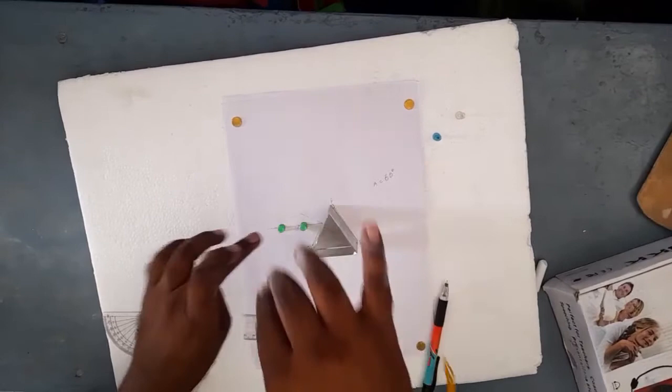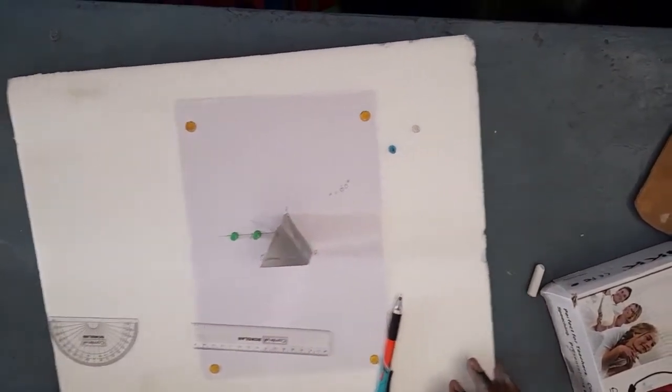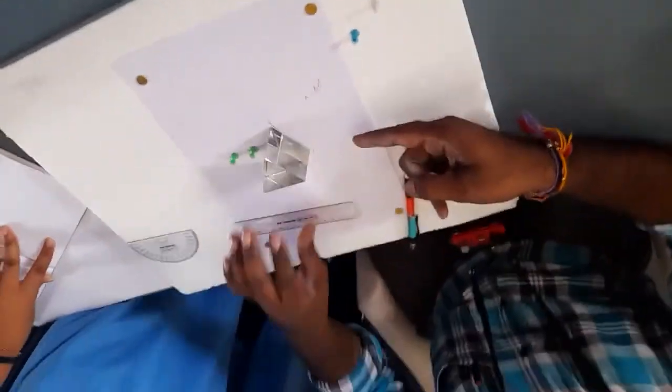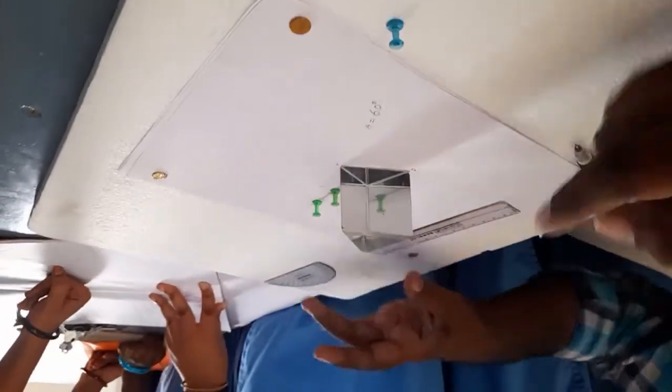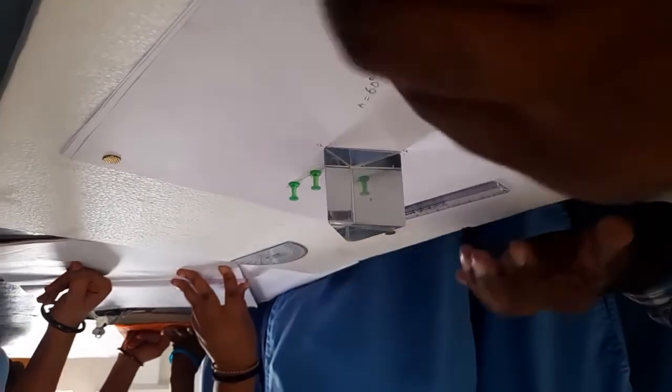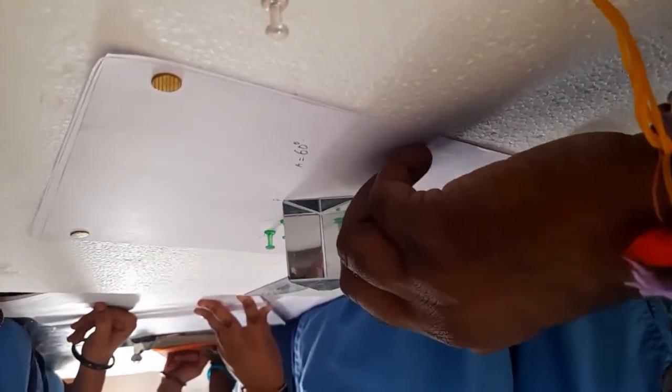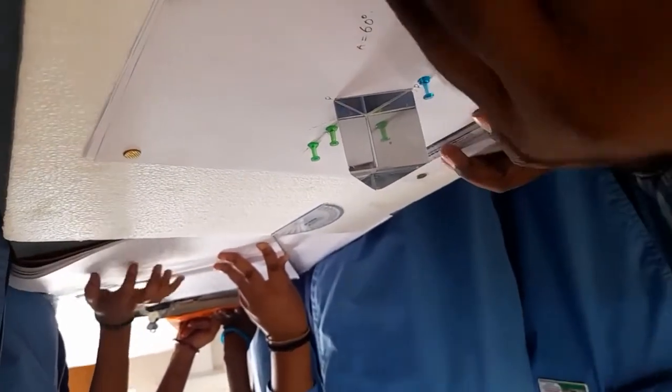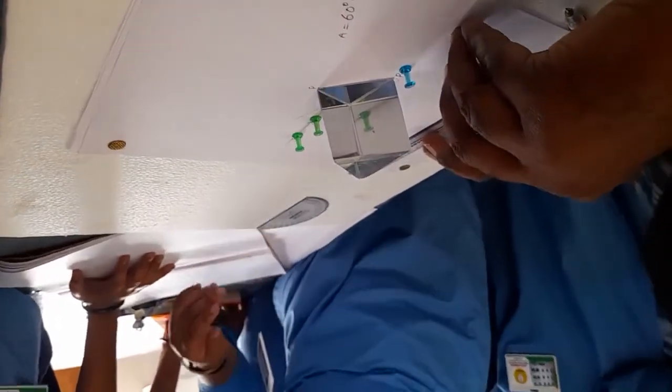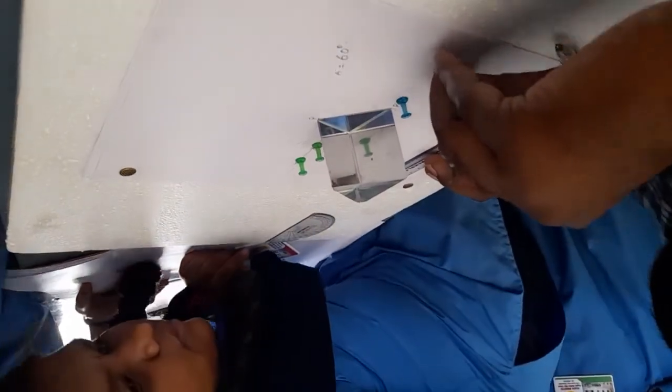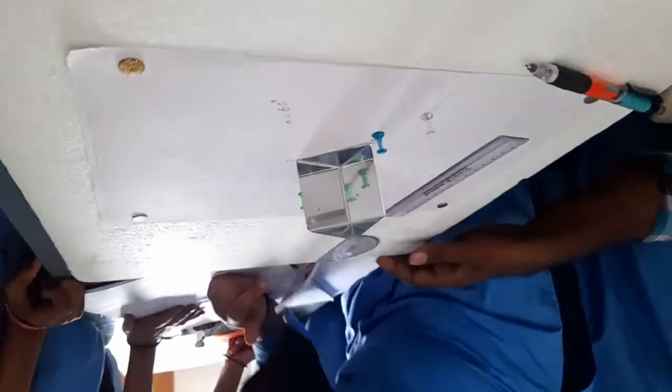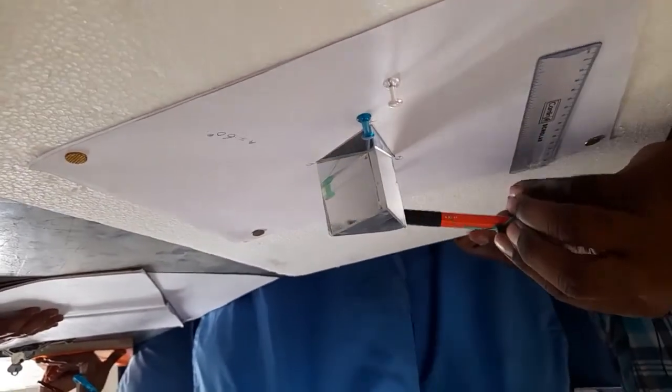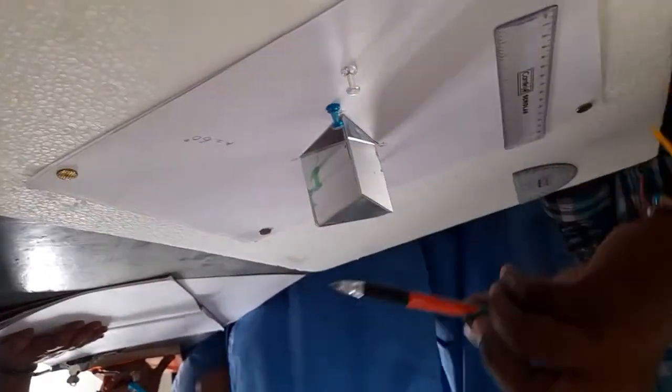Now observing from the other surface of the prism, I need to place two more pins. They should also be in the same line. From this side, you will see pins A and B that we placed on the PQ side, and C and D are the two more pins which are in the same line.